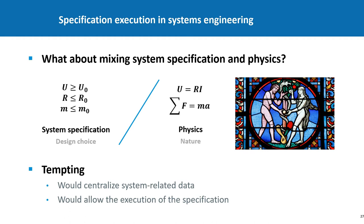System specification is a human design choice — something that you decide about the system, like wanting the mass of the car to be below 1.5 tons. Physics, on the other hand — like U equals RI, or F equals ma, or E equals mc² — is not a human decision, and it's not about the system. Then you may wonder why we don't add physics to the specification model. It's tempting because it would centralize system-related data and allow execution of the specification model. But the word model can have very different meanings, so we have to be very careful — some people highlight that using the word 'model' for both MBSE and physics modeling was maybe not the best decision.